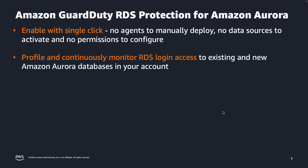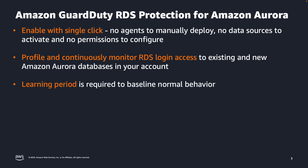After you enable the Amazon GuardDuty RDS Protection feature, it immediately starts to profile and continuously monitor RDS login access to existing and new Amazon Aurora databases in your account. When you enable RDS Protection for the first time, or you have a newly created database instance, a learning period is required to baseline normal behavior. For this reason, newly enabled or newly created database instances may not have an associated anomalous login finding for up to two weeks.